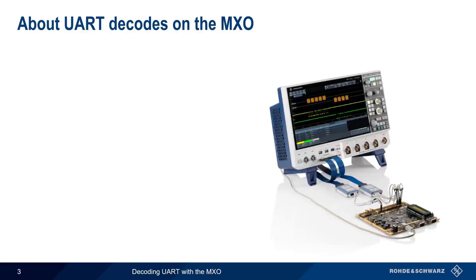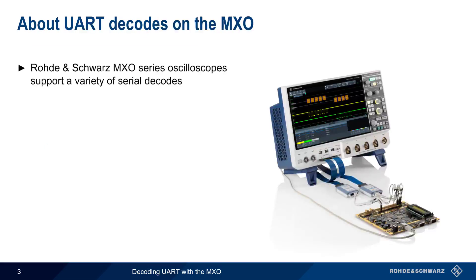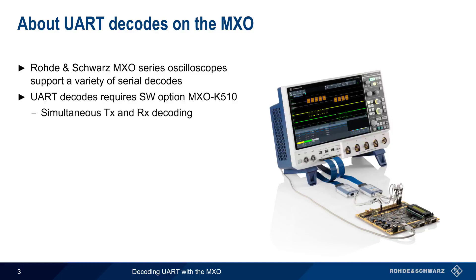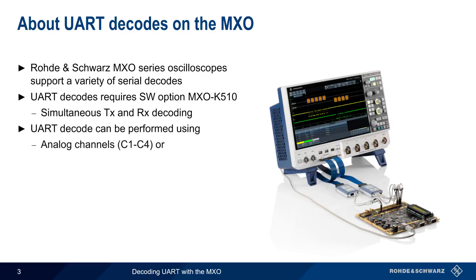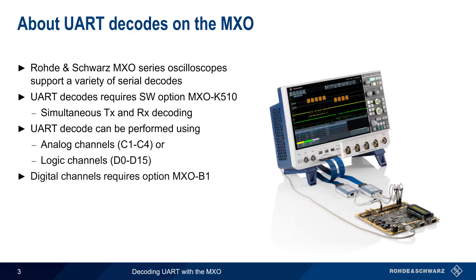Rohde & Schwarz MXO Series Oscilloscopes support a wide variety of serial decodes, and UART decodes are enabled by Software License K510. Both TX and RX can be decoded simultaneously, and UART decoding can be performed using analog channels or digital/logic channels. Note that digital channels require the MXO B1 option as well.